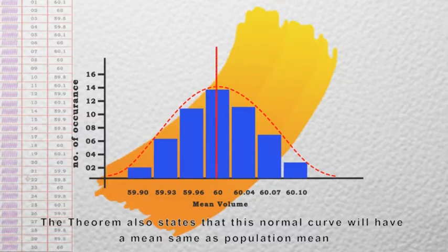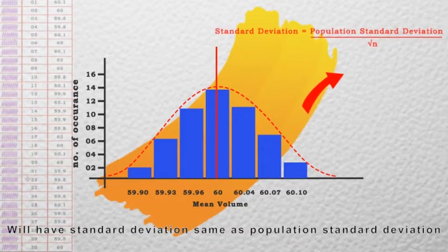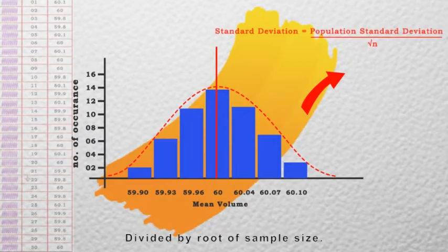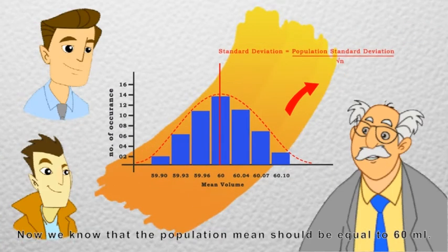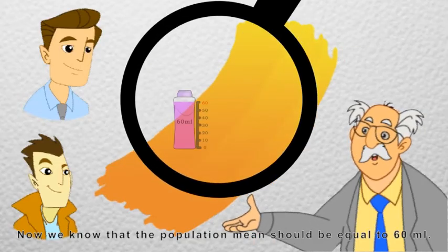The theorem also states that this normal curve will have a mean same as population mean and will have a standard deviation same as population standard deviation divided by the root of the sample size. Now we know that the population mean should be equal to 60 ml.